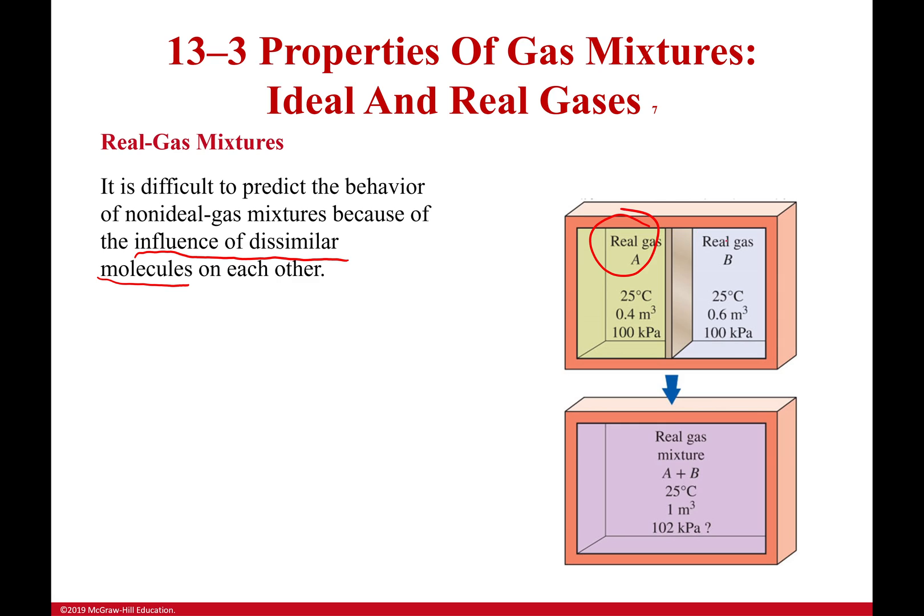Because I might have real gas A and real gas B, neither ideal gases. Both at 100 kilopascals. Both are in nice little separate sections. The volume is going to stay the same when they mix. The temperature is going to stay the same. What about the pressure? The pressure can change. And how do I figure that out?